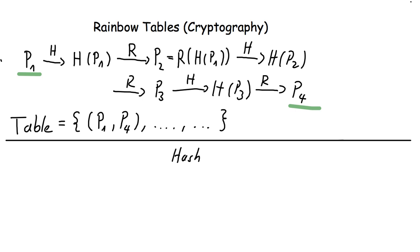What he then does is he applies the reduction function on it and then checks if, for example, if he compares it with the first pair, if this equals to p4.